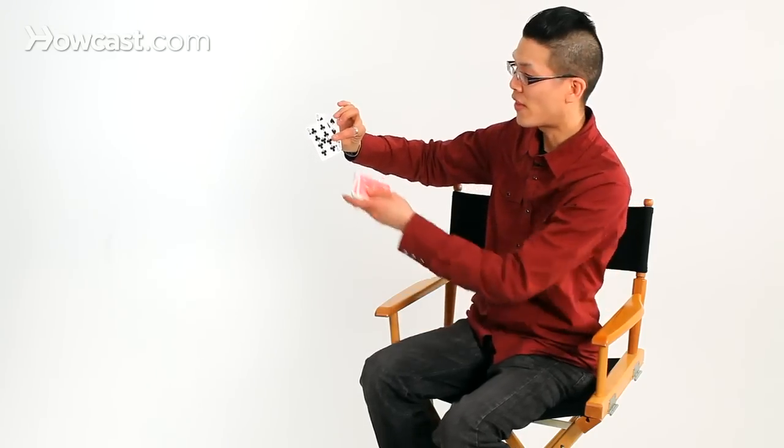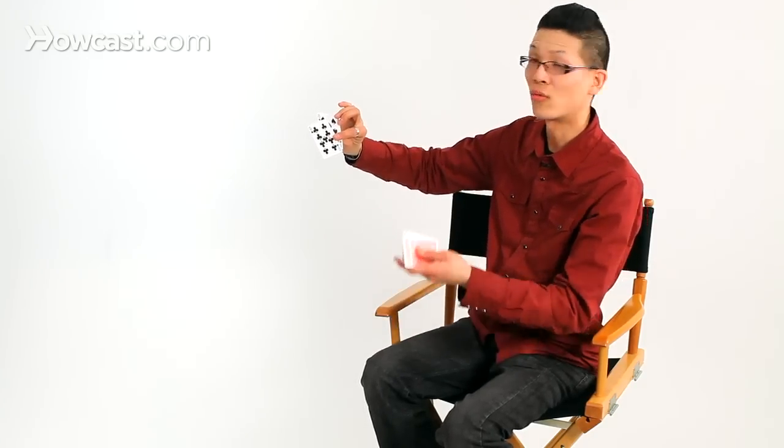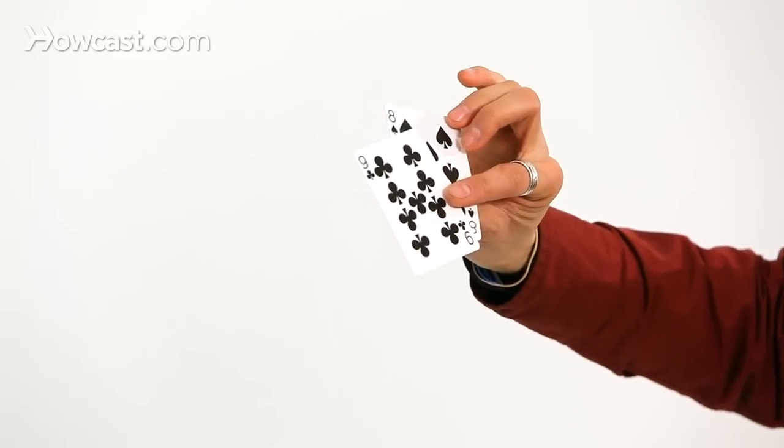But to them, they think it's the same card because in the beginning, you didn't really mention which nine it was and which eight it was. And that's the explanation for the eight and the nine trick.